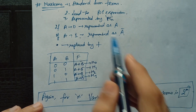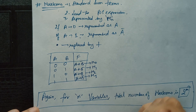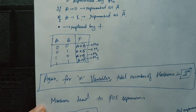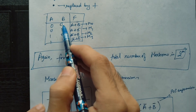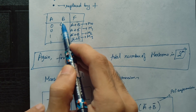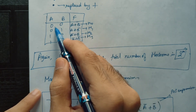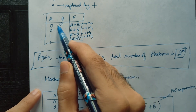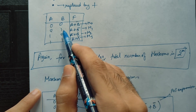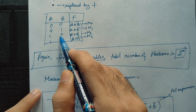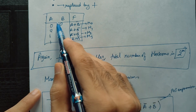Also, the dot (AND) operator in min terms is replaced by plus (OR) in max terms. For example, when A=0, B=0: in a min term we wrote A-bar·B-bar, but in a max term we write A+B. When A=0, B=1: A+B-bar. When A=1, B=0: A-bar+B. When A=1, B=1: A-bar+B-bar. These are max terms M0, M1, M2, M3, based on decimal equivalents.